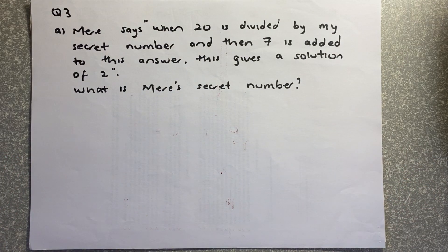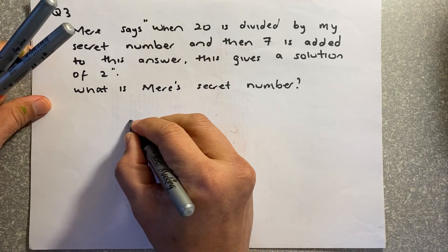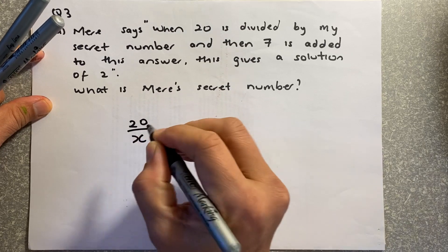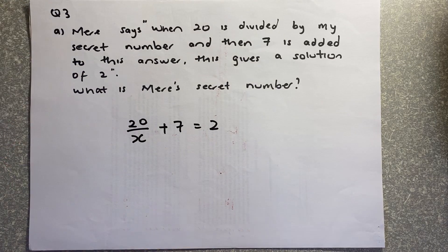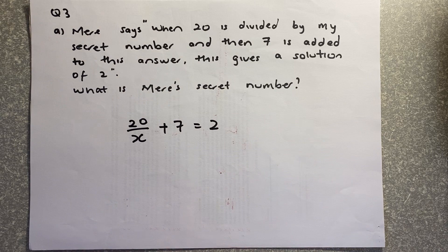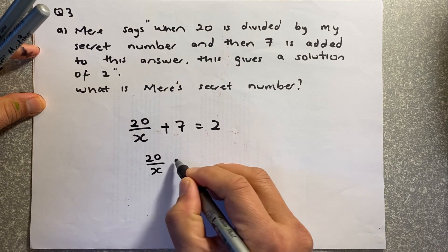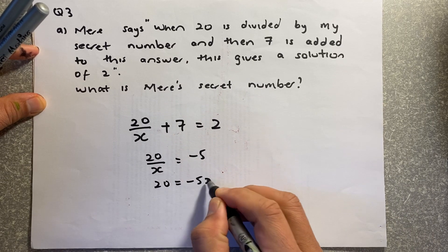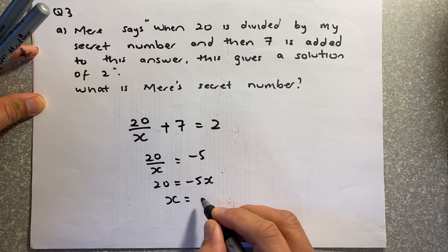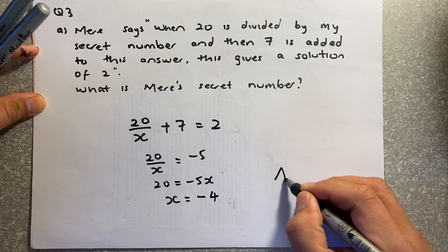The last question. When 20 is divided by a secret number and 7 is added, the answer is 2. Let the secret number be x: 20/x + 7 = 2. Subtract 7 from both sides: 20/x = −5. Multiply by x: 20 = −5x. Divide by −5: x = −4. That gives an achieve.